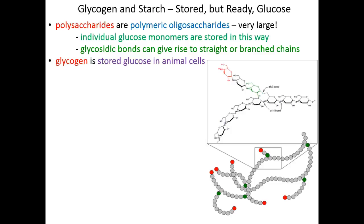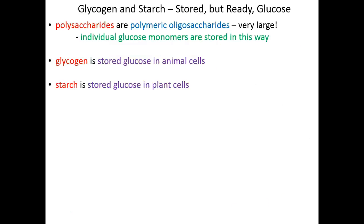There's another consideration for storing sugars this way that we'll return to in many weeks when we talk more about why glycogen makes sense as a storage mechanism. Now, plants don't have glycogen — instead, plants have starch. That's how plants store their own glucose for short-term energy storage, and plants diversify their storage into two forms of starch.